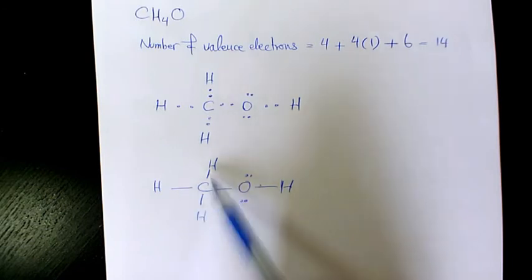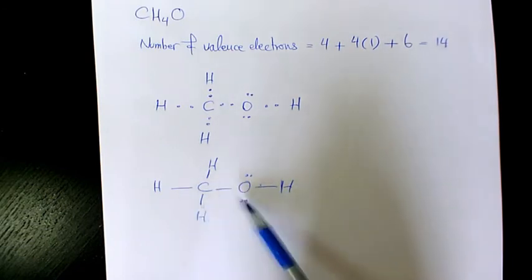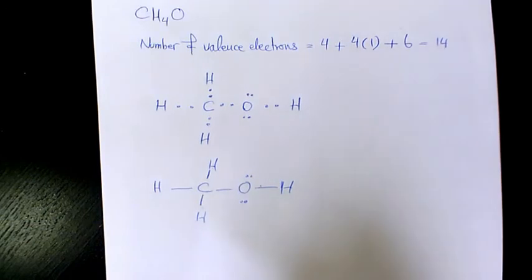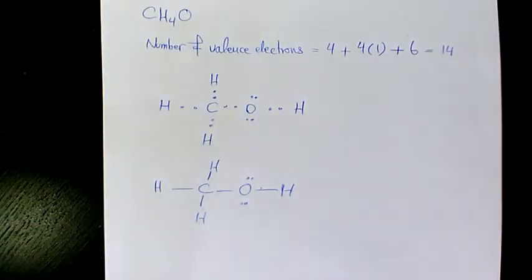And carbon here follows octet, oxygen is octet as well, hydrogen is duet. So this is going to be the Lewis structure for methanol. I hope you enjoyed this video, please leave me a comment if you have any question. Thank you for watching and have a great day.